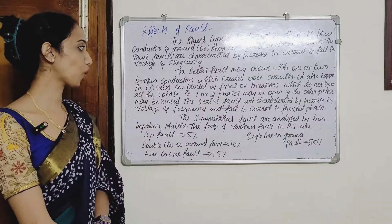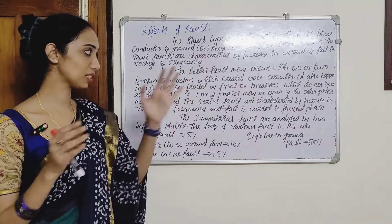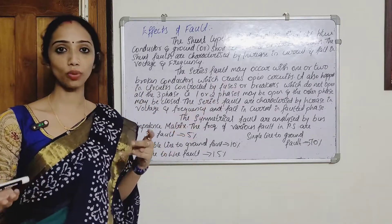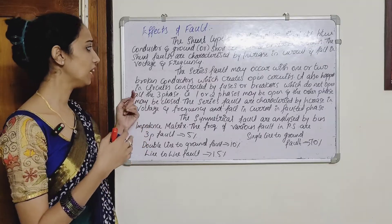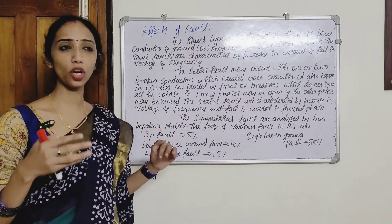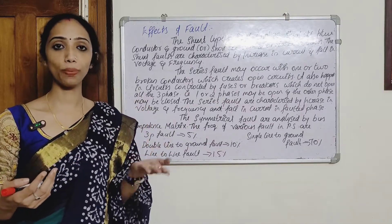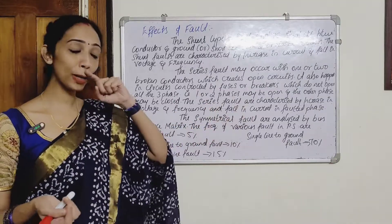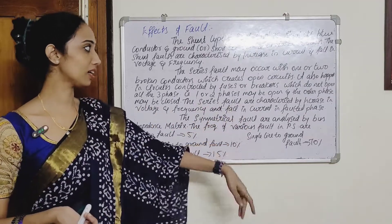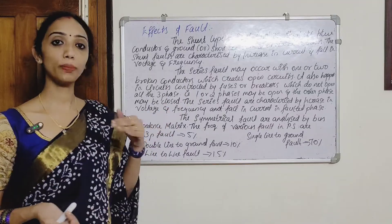Series fault may occur with one or two broken conductors which creates an open circuit. Series fault is also caused in circuits controlled by fuses or circuit breakers which do not open all three phases. As a result, one or two phases may be open while the other phase is closed. Series faults are characterized by an increase in voltage and frequency and a fall in current.